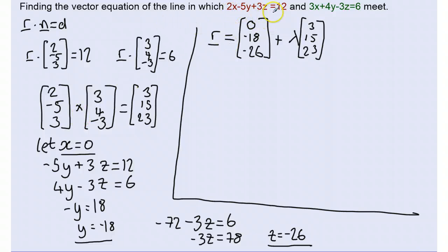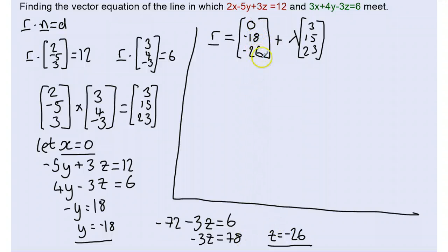Just to clarify what we did: we started with two plane equations in Cartesian form, wrote them in dot product form to find the two normals, then did the cross product of the normals to get the direction of the intersection. We then set x equals zero to find a specific point on the line, working out y and z. That gave us the position vector and combined with the direction vector we wrote down the parametric equation of the line of intersection. We checked it on Autograph and it was correct. Thanks very much for joining me — I'll see you next time.